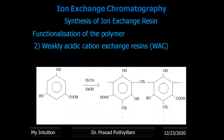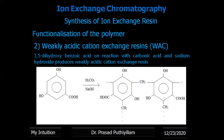For weakly acidic cation exchange resins, one route uses 3,5-dihydroxybenzoic acid reacted with carbonic acid (H2CO3) and sodium hydroxide (NaOH). Cross-linking takes place with a methane bridge — a CH2 group is added in between, and the reaction continues in three dimensions to give a cross-linked structure.